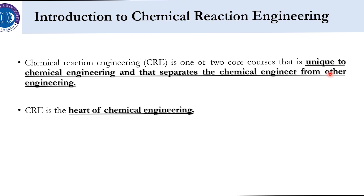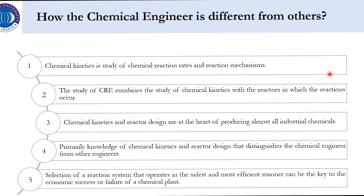Chemical kinetics is the study of chemical reaction rate and reaction mechanism. The study of CRE — chemical reaction engineering — combines chemical kinetics with the reactors, the equipment in which the reaction is going to take place. Chemical kinetics and reactor design are at the heart of producing almost all industrial chemicals.